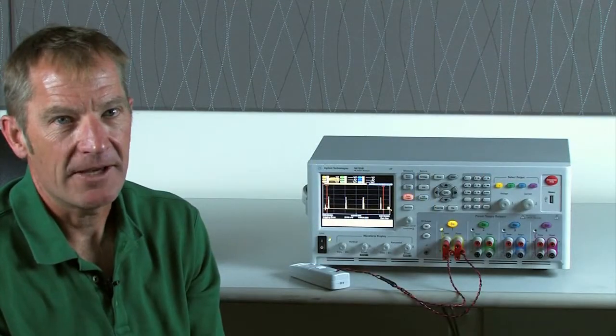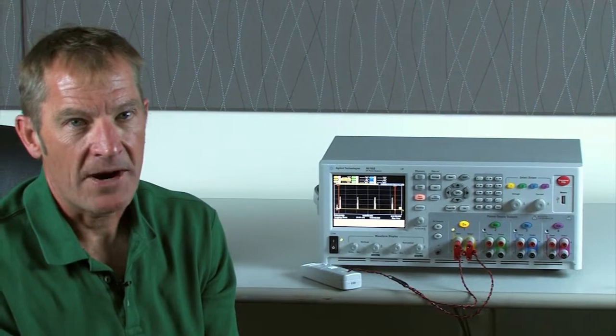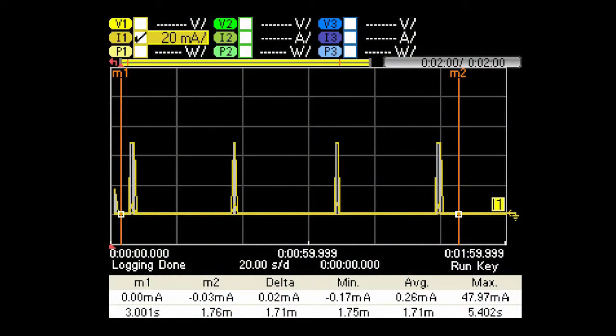Now our data logging is complete. We can see that the wireless transmitter transmits every 30 seconds, and over the two minute period it uses an average of about 260 microamps.